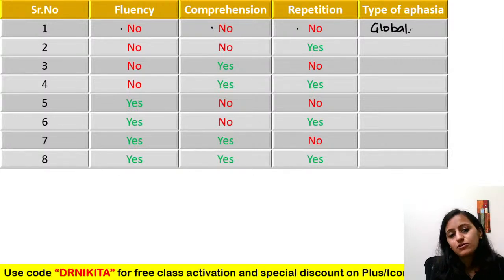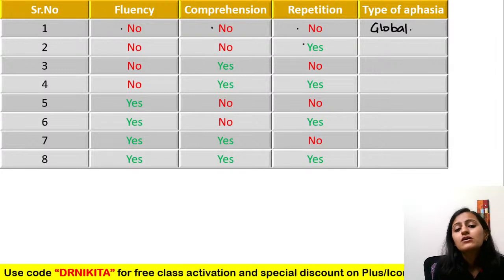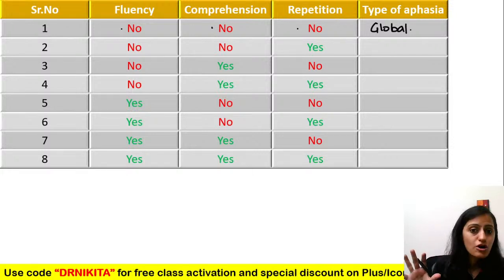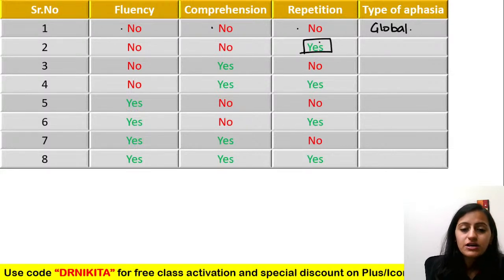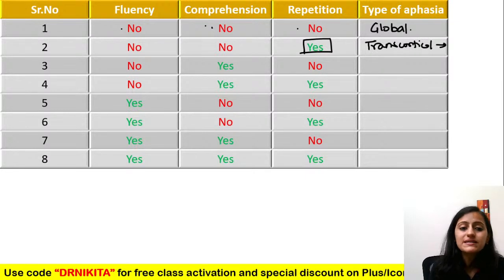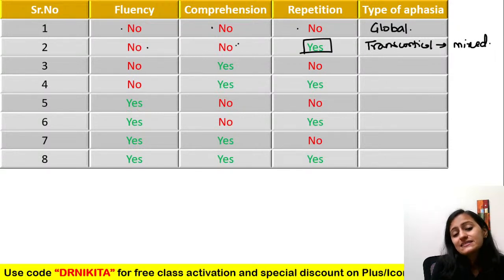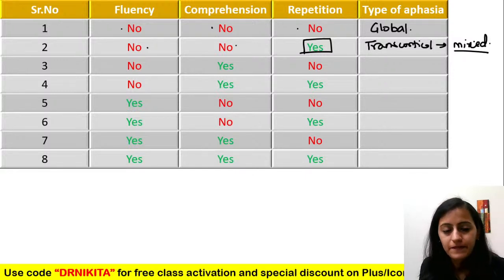Next: no fluency, no comprehension, but repetition is preserved — whenever repetition is normal, think transcortical. Both fluency and comprehension are affected, so this is mixed transcortical aphasia. Next: fluency affected, repetition affected, comprehension normal — Wernicke's is normal, Broca's is gone — this is Broca's or motor aphasia.